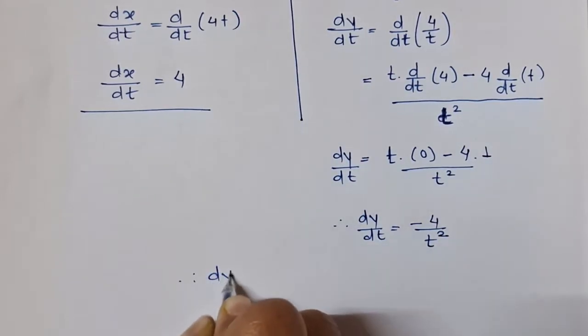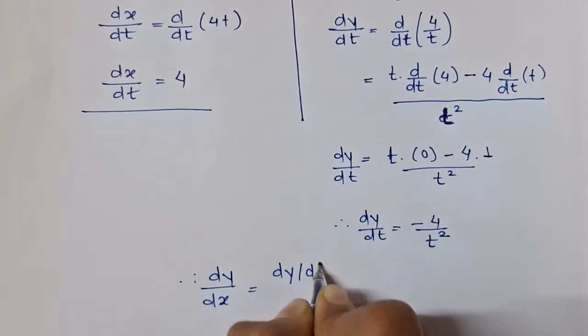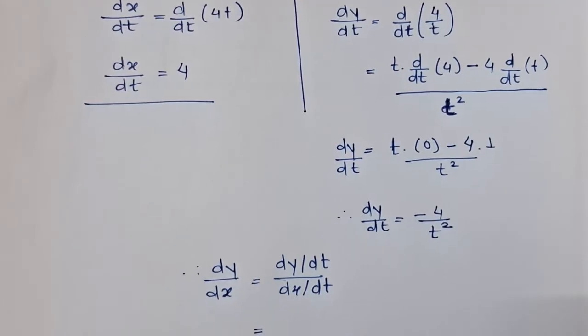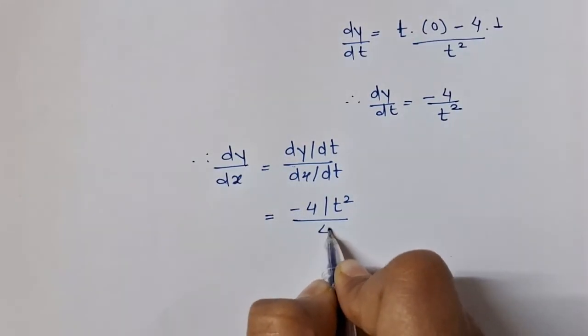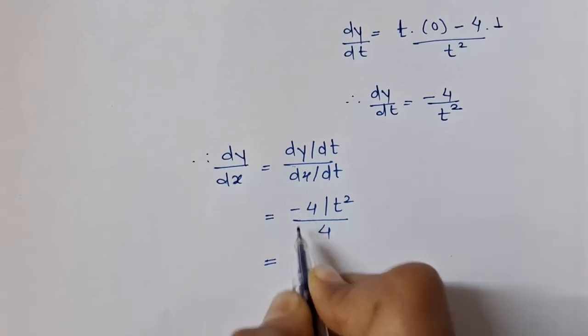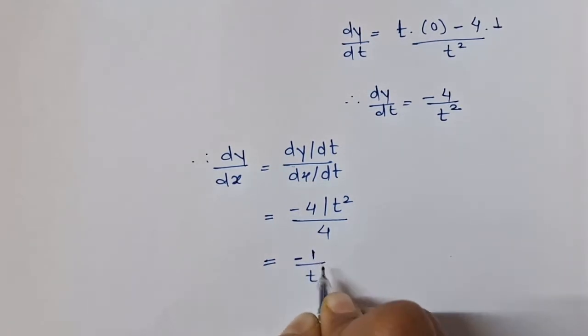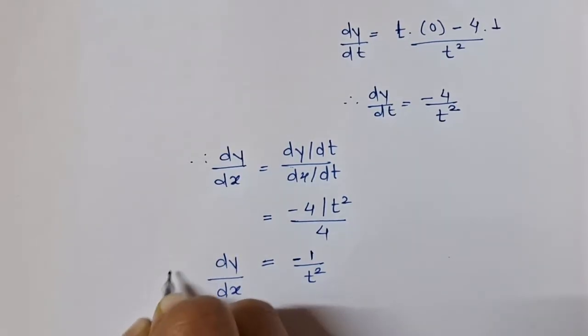Now let's substitute the values into dy/dx. We have (dy/dt)/(dx/dt). The value of dy/dt is -4/t² and the value of dx/dt is 4. So this 4 and this 4 will get cancelled and we will have -1/t². This is our final answer of dy/dx.